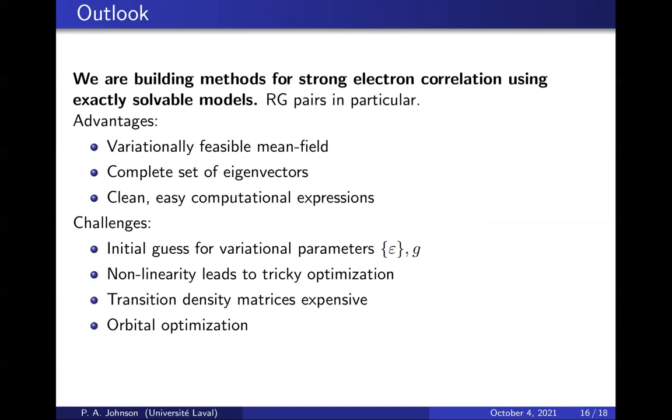In the near-term challenges, we have to decide how we're going to guess our parameters. We haven't solved that. The optimization is a bit tricky. The transition density matrices are more expensive than they need to be, and of course you need to optimize the orbitals for DOCI to be perfect. So these are all near-term challenges that will be solved in the near term. I would argue that this is a promising approach for strongly correlated systems.